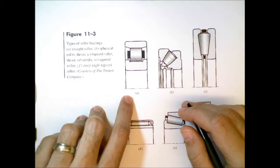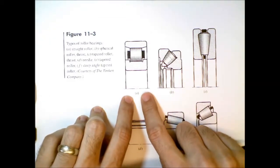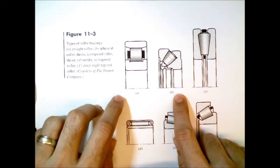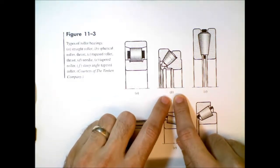I should point out here, bearing A, the straight roller bearing, this can handle only radial forces, whereas this spherical bearing can handle both radial and thrust forces.